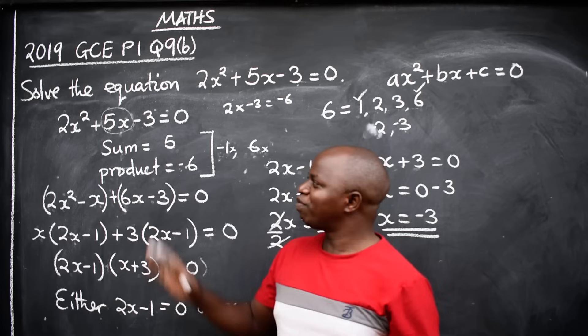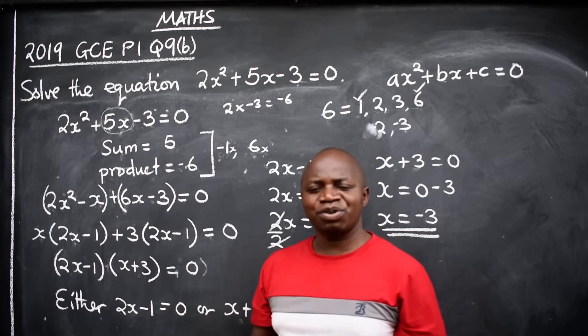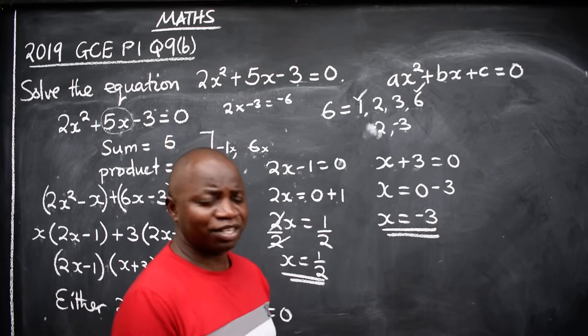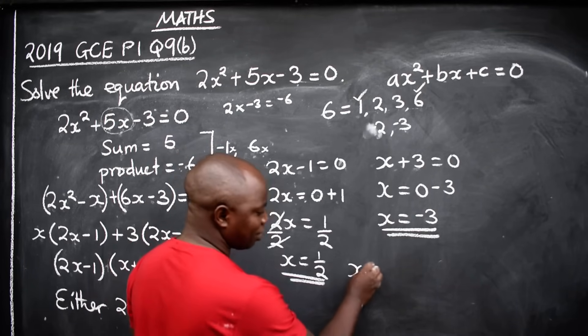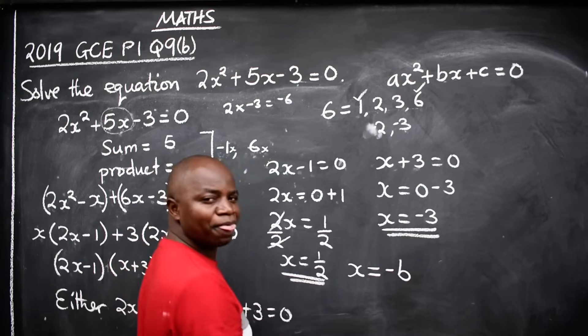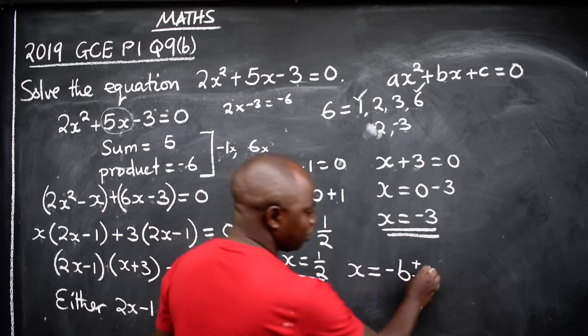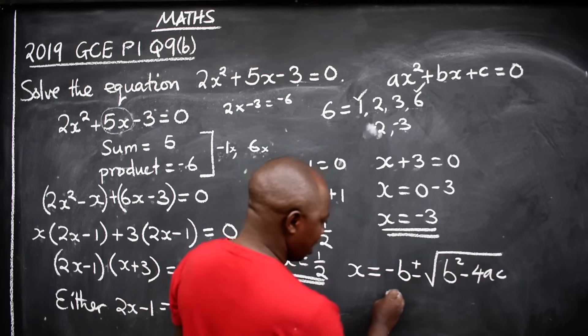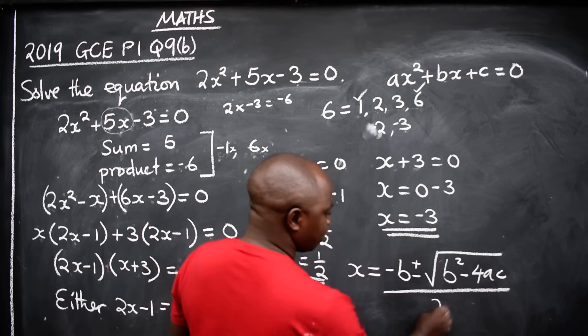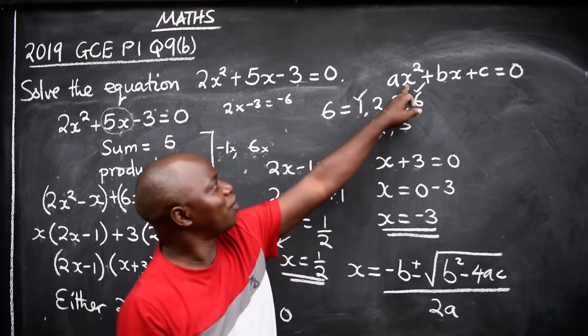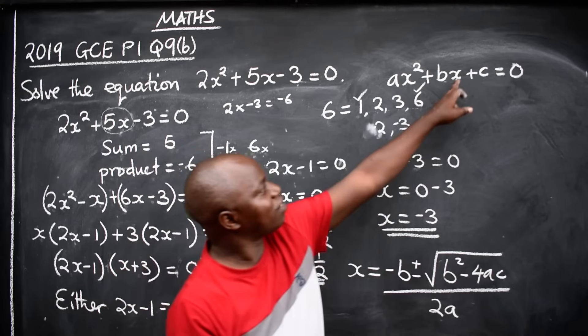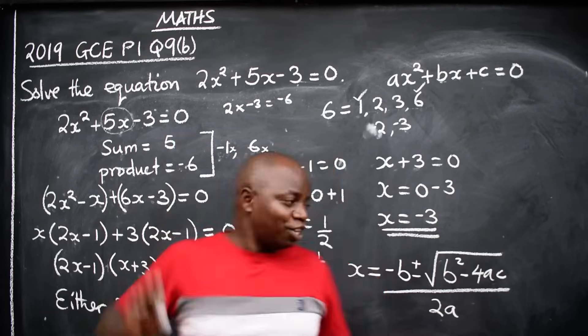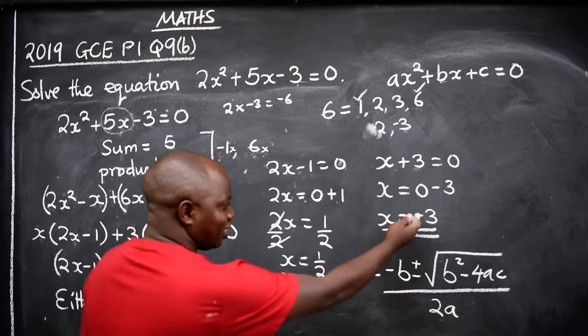This is the way we solve quadratic equations by factorization, ladies and gentlemen. I hope you've gotten the concept. In a case whereby you want to use the quadratic formula, I hope you still remember: x = (-b ± √(b² - 4ac)) / 2a, where a is the coefficient of x², b is the coefficient of x, c is the constant. So you try this question using the quadratic formula, and you are going to find the same answers.